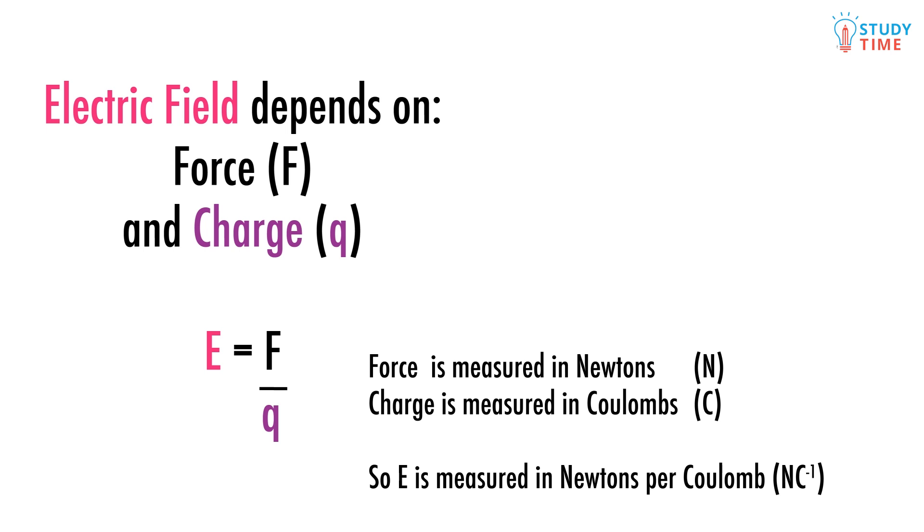Here's the first equation for an electric field that you need to learn. E equals F over q. This is a really important equation for you to learn. On the right side we have the force that's exerted on the charged object, which is simply measured in newtons as always, and we've got the charge of the object, measured in coulombs. On the left is E, the electric field strength. Field strength is simply measured in newtons per coulomb.